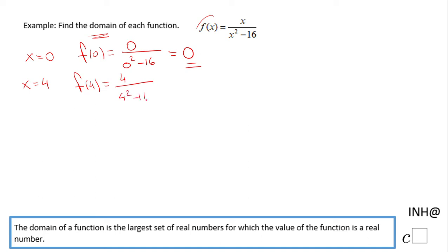Now let's try x equals 4. That will be 4 over 4 squared minus 16, which is 4 over 16 minus 16 equals 4 over 0. And this one is what we call undefined. You cannot divide by 0. So we notice x equals 4 is not a value that belongs to the domain.